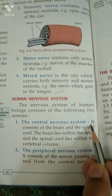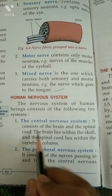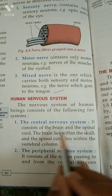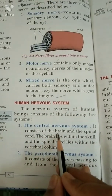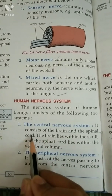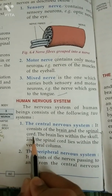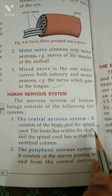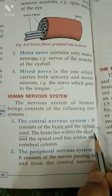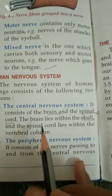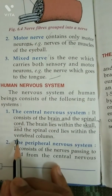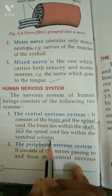Central Nervous System consists of the brain and the spinal cord. The brain lies within the skull, and the spinal cord is in the vertebral column.